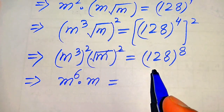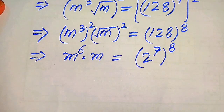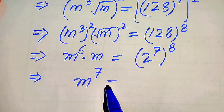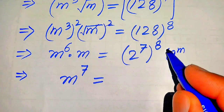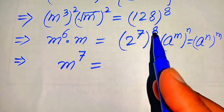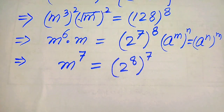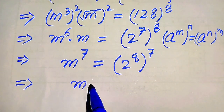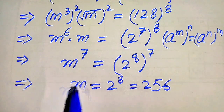We write 128 as 2 to the power of seven, so the right side becomes 2 to the power of seven, whole to the power of eight. On the left side, m to the power of six times m equals m to the power of seven. Now we use the exponent law: if we have a to the power of n to the power of m, we multiply the exponents. So exchanging the two exponents gives 2 to the power of eight, whole to the power of seven. Comparing both sides, m equals 2 to the power of eight, which equals 256.